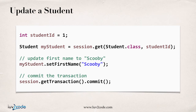Because this student object is a persistent object that we retrieved from the database, we can simply call the appropriate setters and then finally do a commit. And that'll actually update the database, which is something that's a little tricky — it's not what you're commonly used to seeing, but once you understand it, it's actually really cool. So there's no need to explicitly call save or update; you simply commit the transaction.